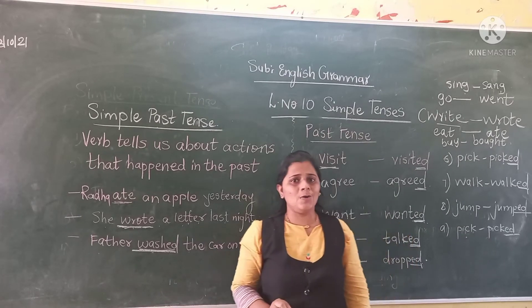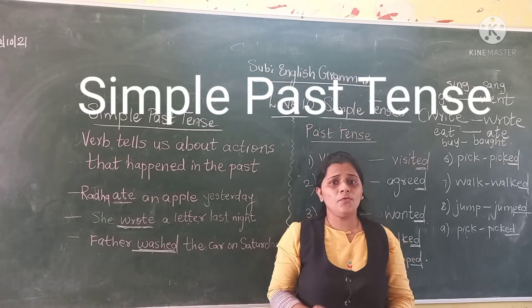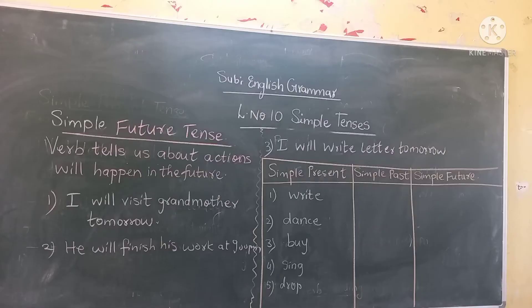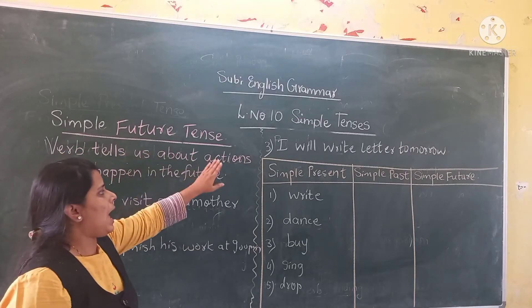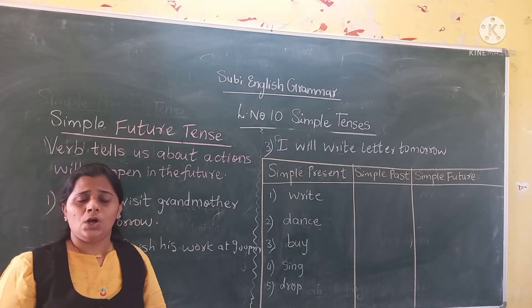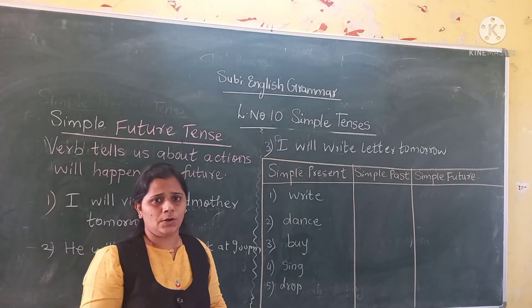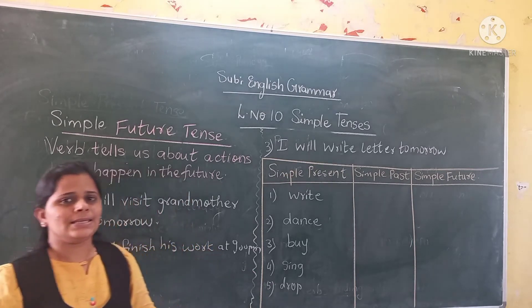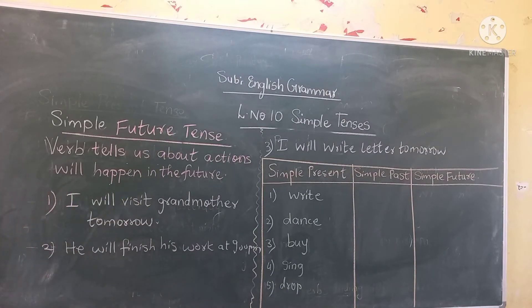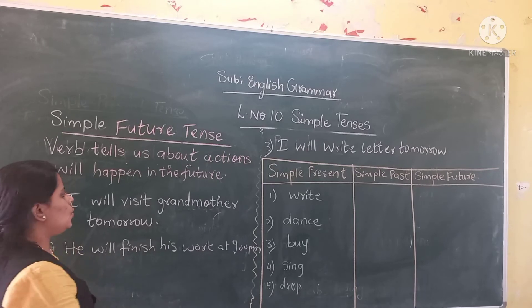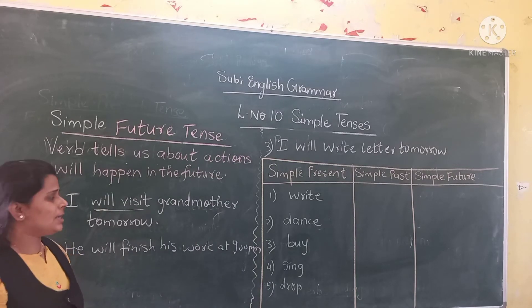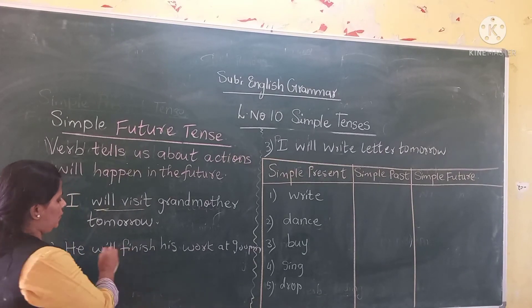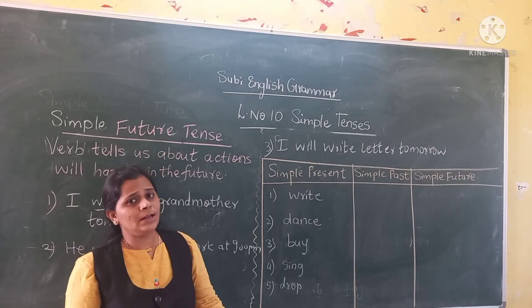I hope students you all have understood about simple past tense. Now we will go to simple future tense. Let us understand what is simple future tense. The verb tells us about actions that will happen in the future — it is tomorrow. So that sentence is known as simple future tense. Example: 'I will visit grandmother tomorrow.' Here we have added 'will' — will visit, will go, will finish, will buy, will pay. So in future tense we add 'will' before the verb.